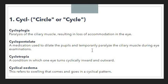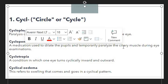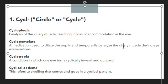After that we have cyclotropia. Cyclotropia is a condition in which one eye turns cyclically inward and outward. Again you can see it is denoting the movement of a cyclical cycle, so this is considered as cyclotropia.